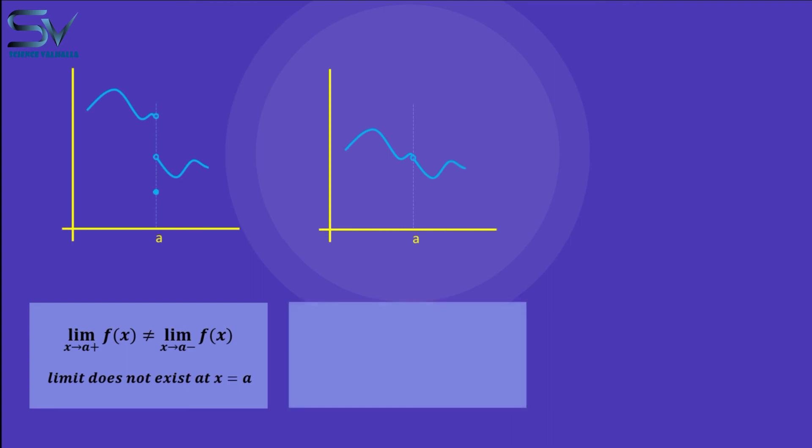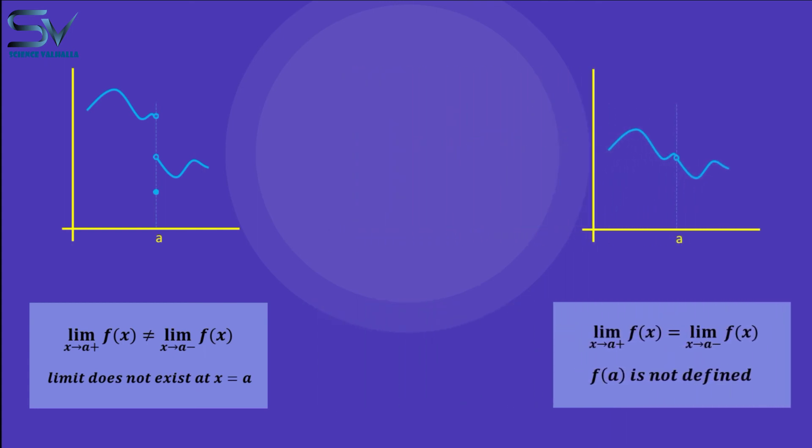Consider the second example. The left and right limits are equal in this case. However, no function value is defined at X equals A. As a result, this is yet another condition of discontinuity at a point.